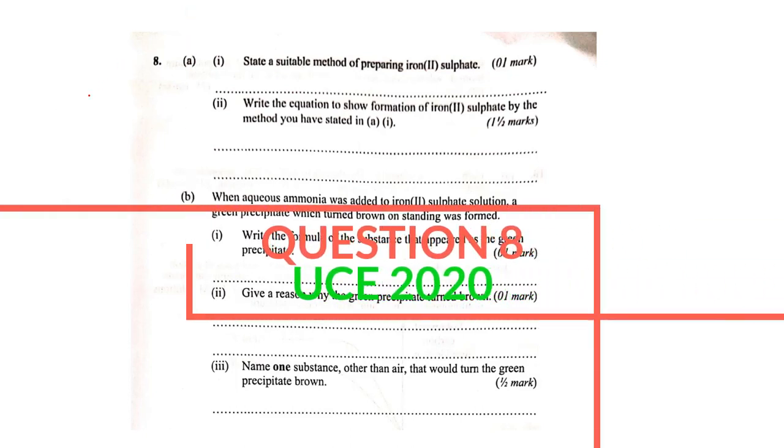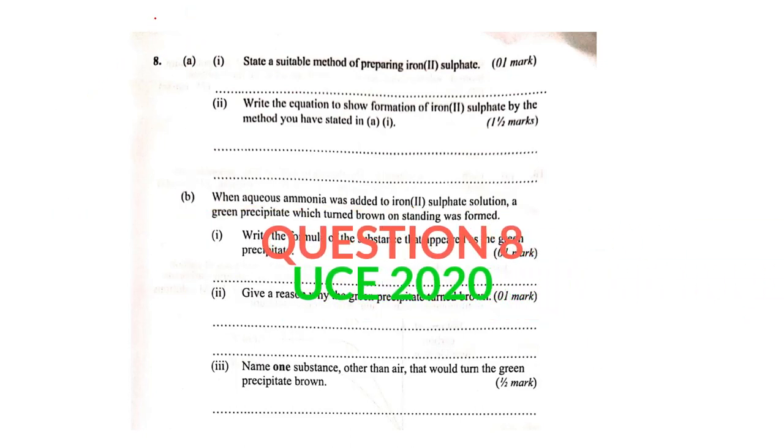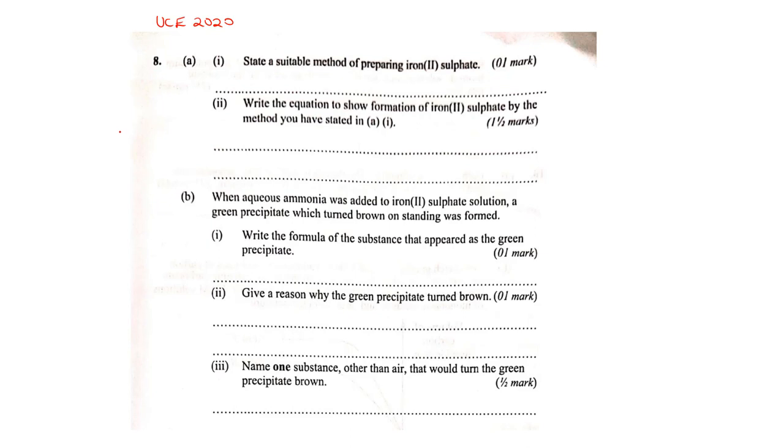Hello and welcome. We are going to look at question 8 of UCE 2020. This is paper 2 chemistry and we have been looking at the previous questions from 1 to 7.